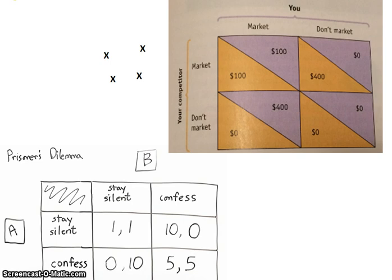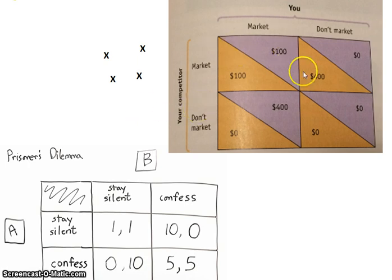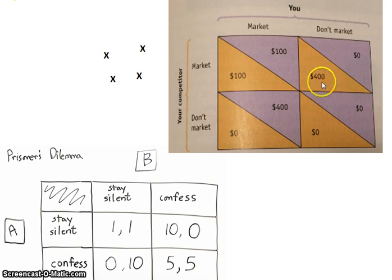One of the other things we talked about was the prisoner's dilemma, which then led to game theory and how markets look at one another. In order to figure out the dominant strategy, you look at what's the best option if you didn't have to worry about the other person — it would obviously be for your competitor not to market, and for you to market. Those would be your dominant strategies.